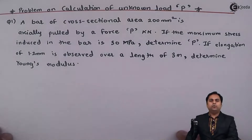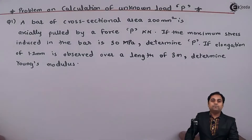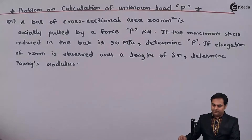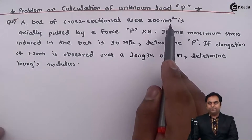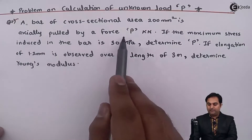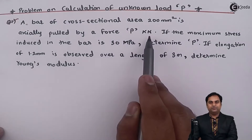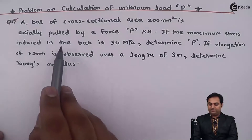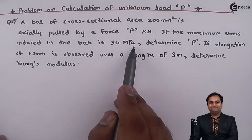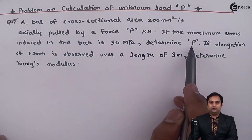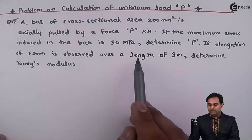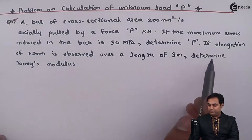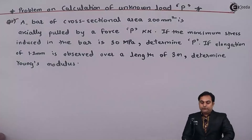Hello friends, in this video we are going to see a problem in which we will calculate an unknown load. A bar of cross-sectional area 200 mm² is pulled by a force of P kilonewton. If the maximum stress induced in the bar is 30 megapascal, determine P. If an elongation of 1.2 mm is observed over a length of 3 meters, determine Young's modulus.